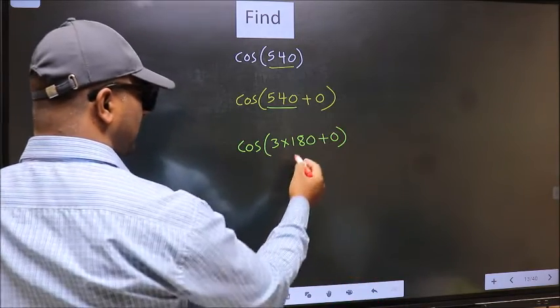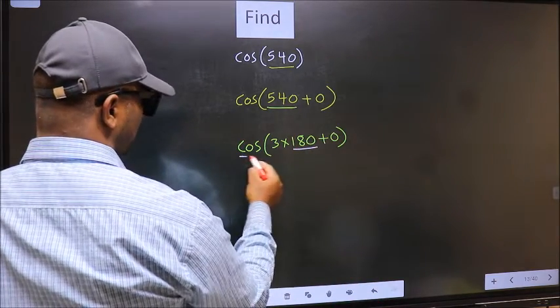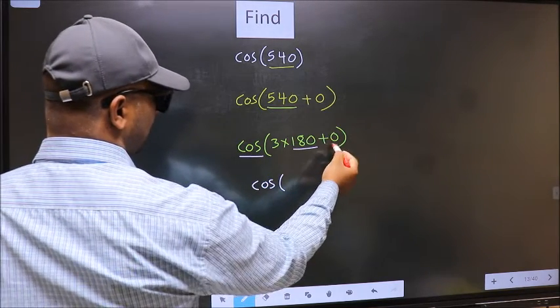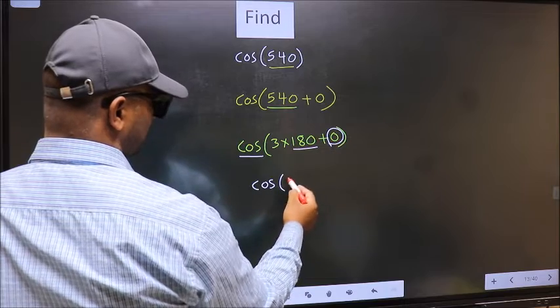Next, here we have 180. So cos is not going to change. It will remain cos. And inside, we get this angle 0.